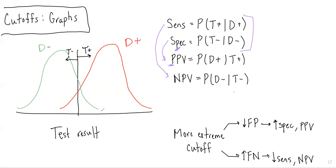So for example, let's say that the cutoff is pushed to the right, such that the new cutoff actually lies in this general area. Then if we think about sensitivity, so sensitivity is the probability of getting a positive test result given you have the disease,